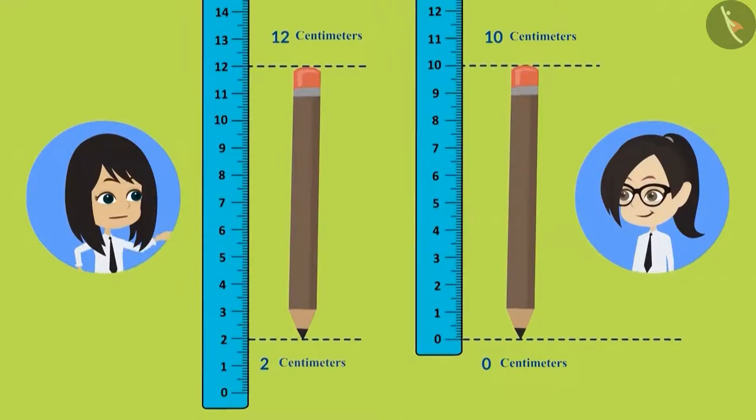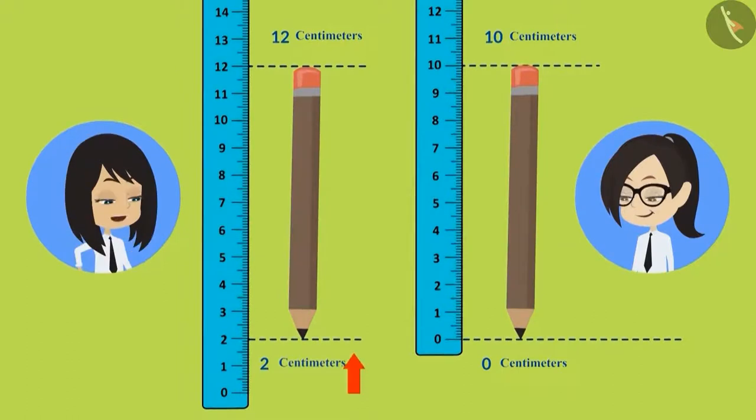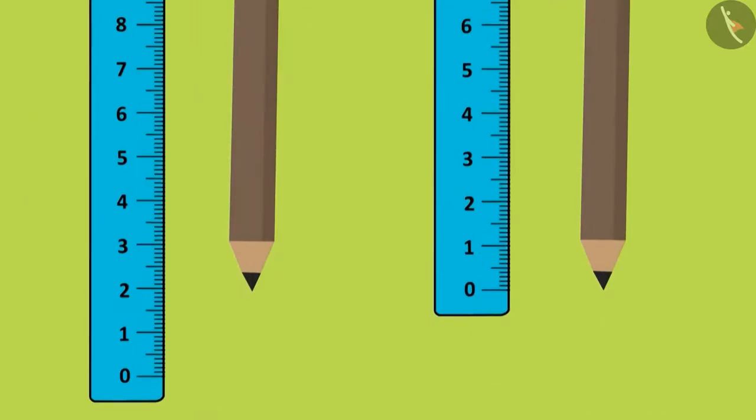I understand now. The problem with keeping the pencil at 2 centimeters is that there is no pencil from 0 centimeters to 2 centimeters, and I included that length as well in the measurement. Now I will correct it. I will keep the pencil at 0 centimeter.